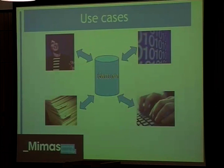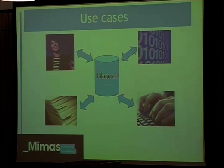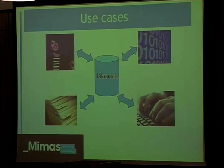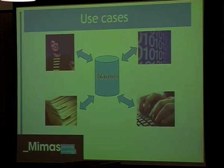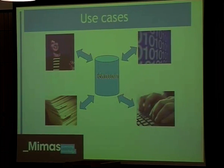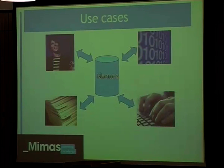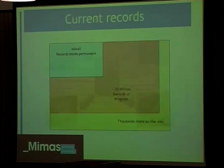There are a number of different use cases that we see. We've got Brian using his identifier for making a paper submission. We've got external services on the right using the API to pull the data out for whatever means they might want to. We've got another researcher searching NAMES to find Brian's profile, and we've also got libraries using it for cataloguing purposes.